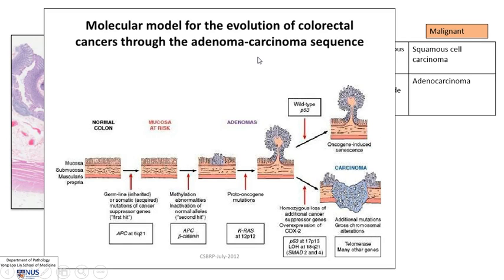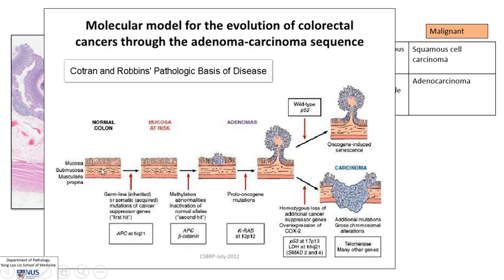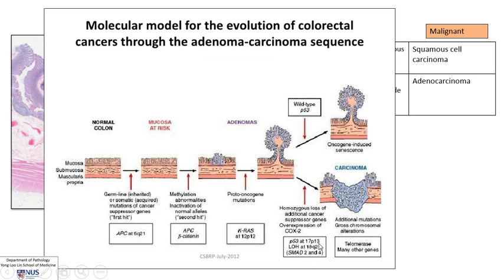This is the molecular model for the evolution of colorectal cancers, known as the adenoma-carcinoma sequence. We start with normal colon, and along the way cumulatively increasing numbers of genetic aberrations lead to the development of adenomatous polyps, which are benign. Further on, as they collect even more abnormalities, such as P53 mutation, they can develop into invasive adenocarcinoma.